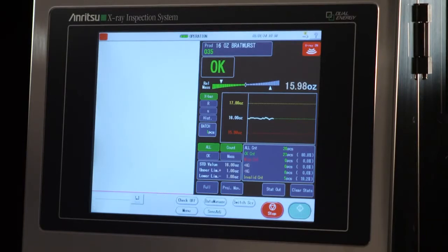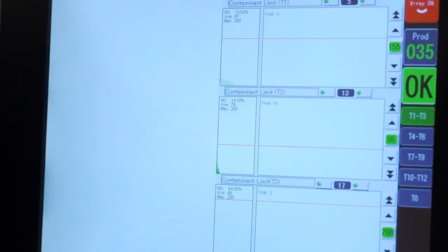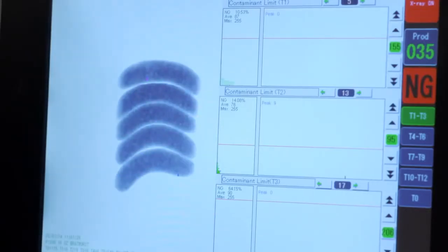Ultra HD and HD technology allows us to find very small metals in both food and pharmaceutical products. In a nutshell, it allows us to find 0.8 millimeter and below stainless steel detection in just about all food products. In thinner applications or pharmaceuticals, we can get down to 0.2 or 0.3 millimeter stainless.